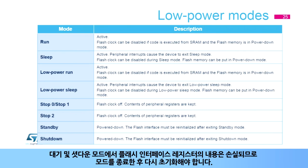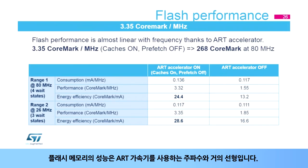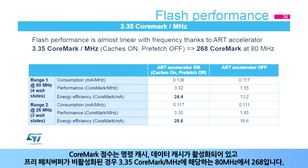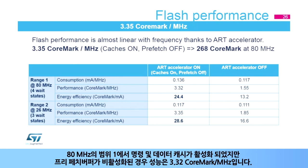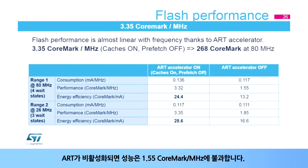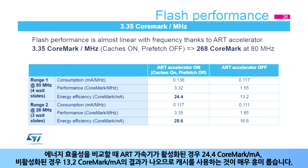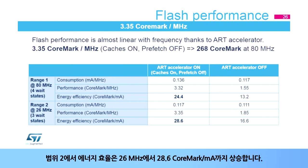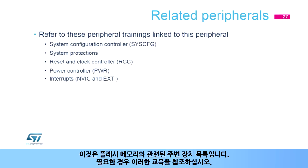The performance of the flash memory is almost linear with frequency using the ART accelerator. The CoreMark score is 268 at 80 MHz, corresponding to 3.35 CoreMark per MHz when the instruction cache and data cache are enabled and the prefetch buffer is disabled. In range 1 at 80 MHz, performance is 3.32 CoreMark per MHz with caches enabled and prefetch disabled. When the ART is disabled, performance is only 1.55 CoreMark per MHz. For energy efficiency, enabling the cache yields 24.4 CoreMark per mA with ART enabled versus 13.2 CoreMark per mA when disabled. In range 2, energy efficiency rises up to 28.6 CoreMark per mA at 26 MHz. This is a list of peripherals related to the flash memory.